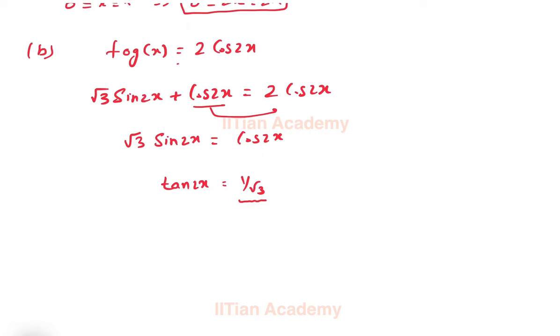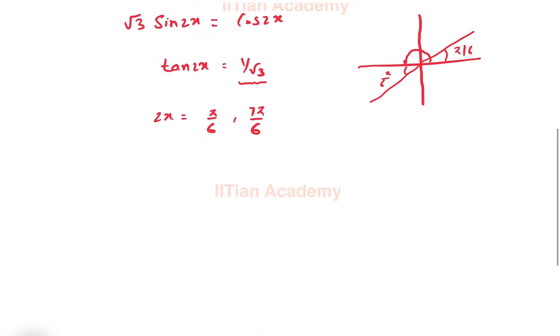Now when tan 2x = 1/√3, we see tan x is positive 1/√3 at π/6 and in the third quadrant at π + π/6. So the value of 2x will be either π/6 or 7π/6.